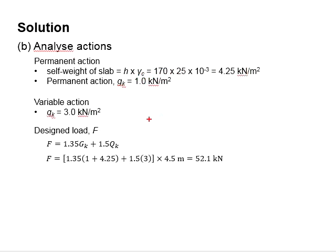The variable was given, which is 3 kN per m². Therefore, your design force, which is equal to 1.35 times GK plus 1.5 times QK times 4.5 m, you will get 52.1 kN.